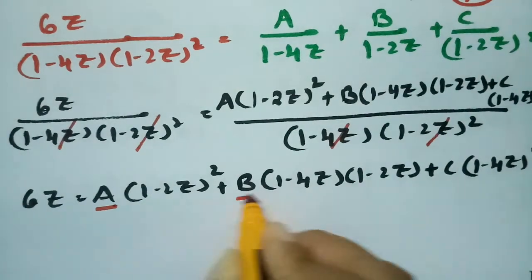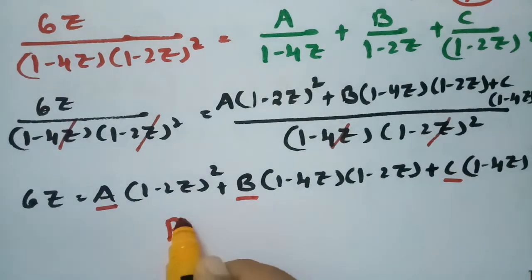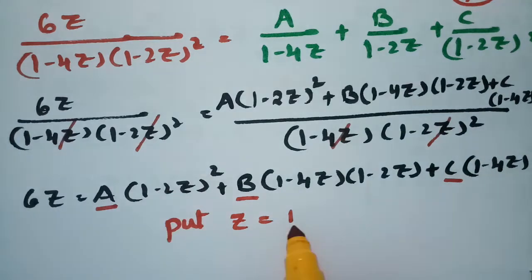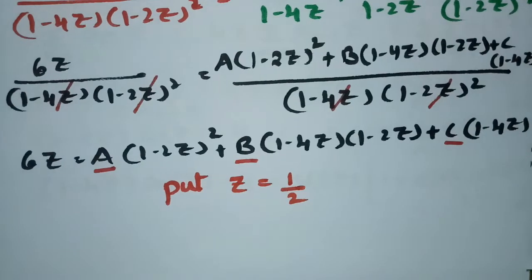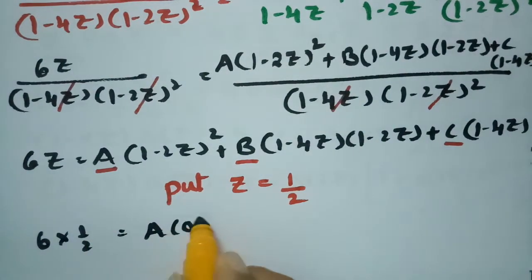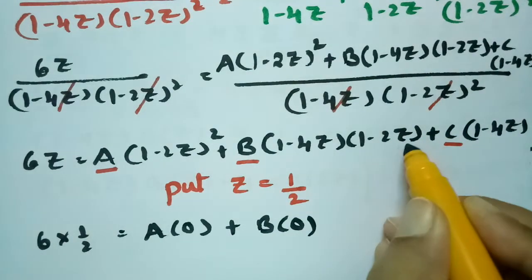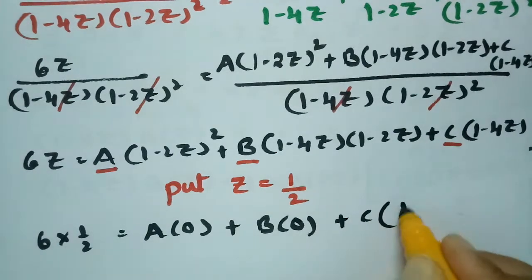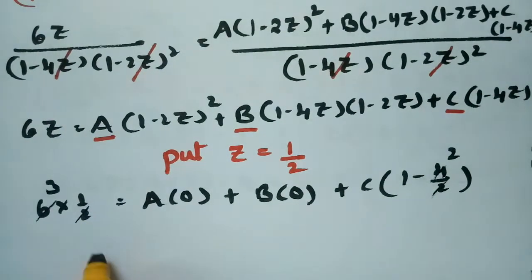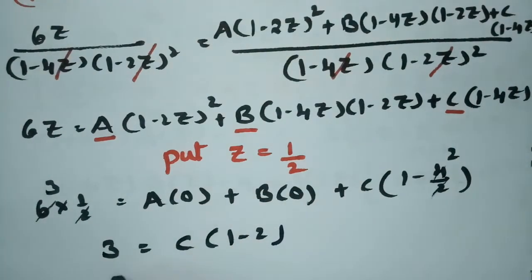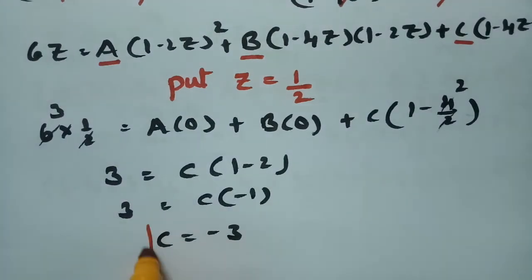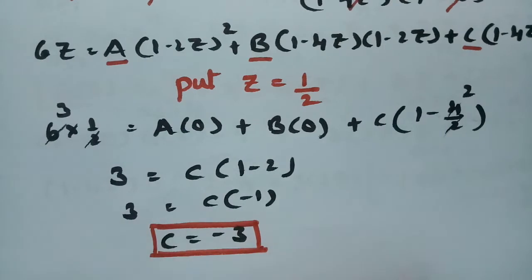To find C, put z = 1/2: 6·(1/2) = 0 + 0 + C·(1 − 4·(1/2)), so 3 = C·(1−2) = C·(−1), therefore C = −3.